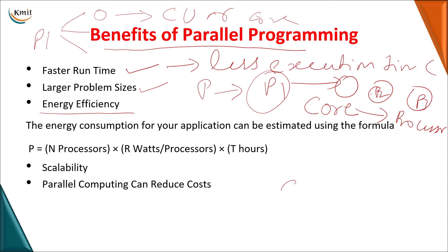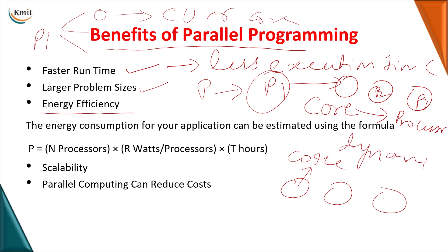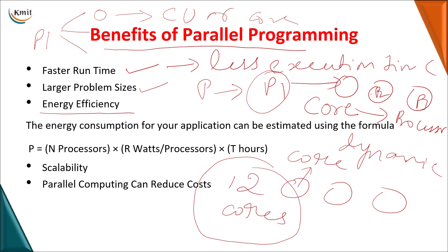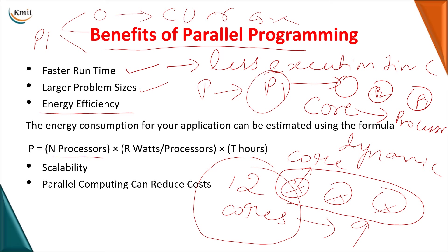The energy consumption is calculated as: number of processes working × amount of energy each takes × number of hours a processor is used. So if instead of 12 cores I use only 9, the energy consumption is also less. The next benefit is scalability — you can add any number of processors to the existing system, increasing the scalability. Parallel computing can also reduce cost — as you increase the number of cores, the cost is reduced, and the cost per core need not be high compared to a normal CPU.